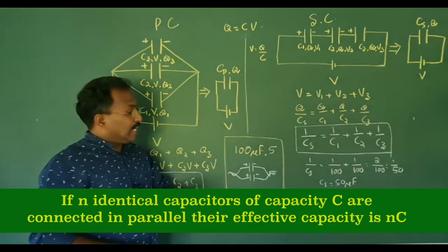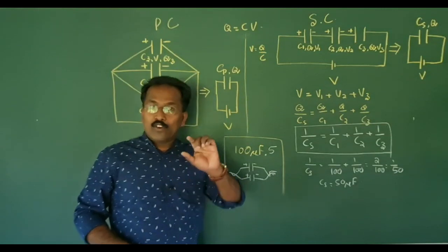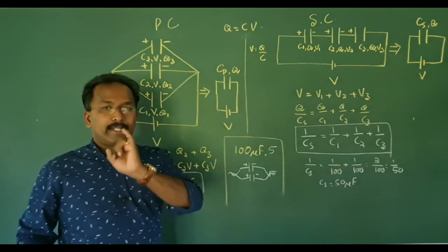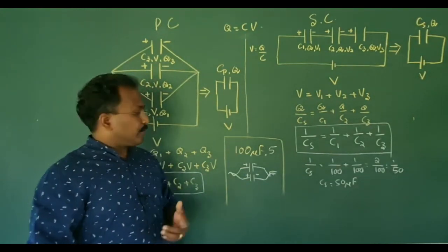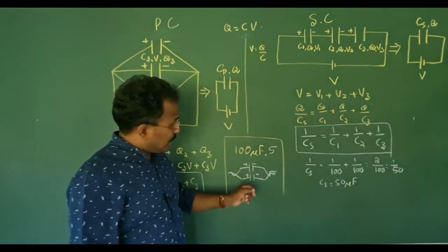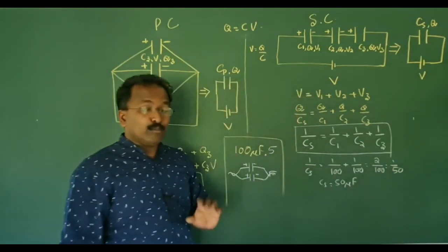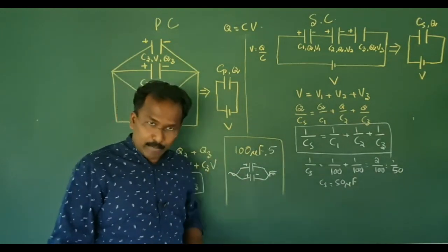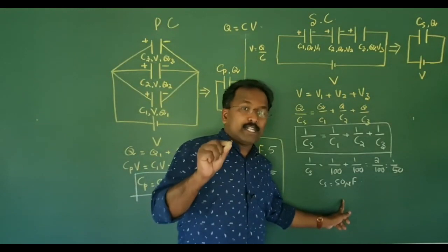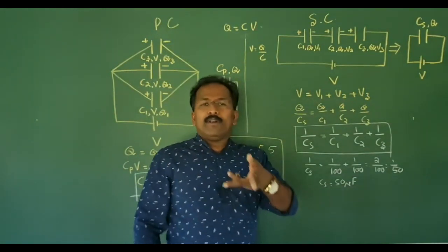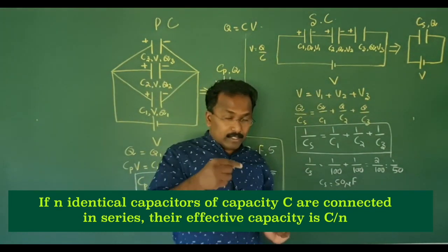If N identical capacitors of capacity C are connected in parallel, their effective capacity will be NC. For a series connection of 5 identical 100 µF capacitors, the effective capacity is 100 divided by 5, which equals 20 µF. If N identical capacitors are connected in series, their effective capacity will be C divided by N.